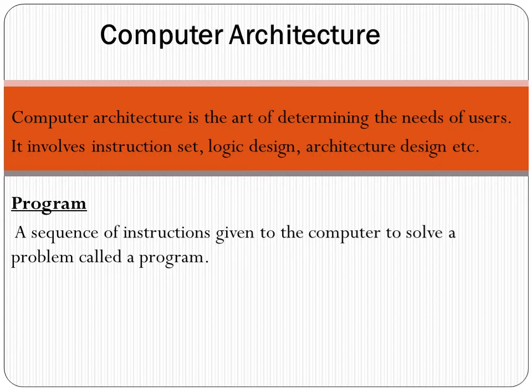For example, if we want to construct a building, then the art of designing and constructing that building is called architecture. We use different programs for designing the structure of something, where a program is a set of instructions given to the computer to solve a problem. We use different software in computer architecture.